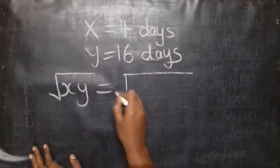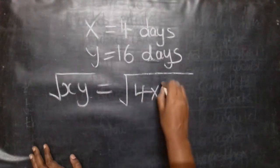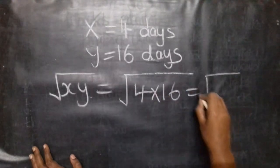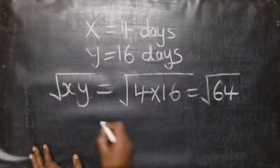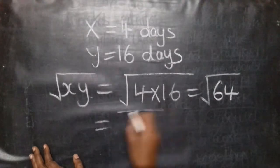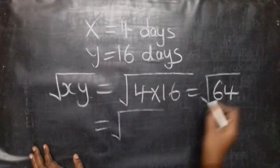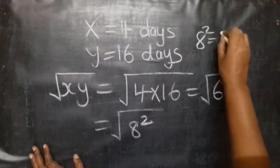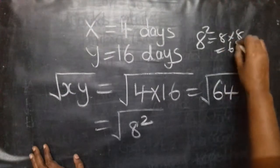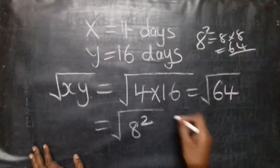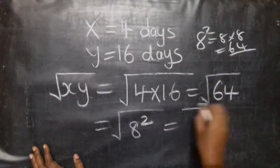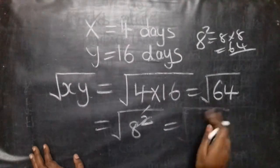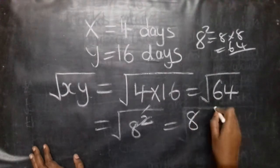Root of 4 multiplied by 16, which equals root of 64. Root of 64 is root of 8 squared. Because 8 squared is 8 multiplied by 8, which is 64. Square and square root cancel, so the answer is 8 days.